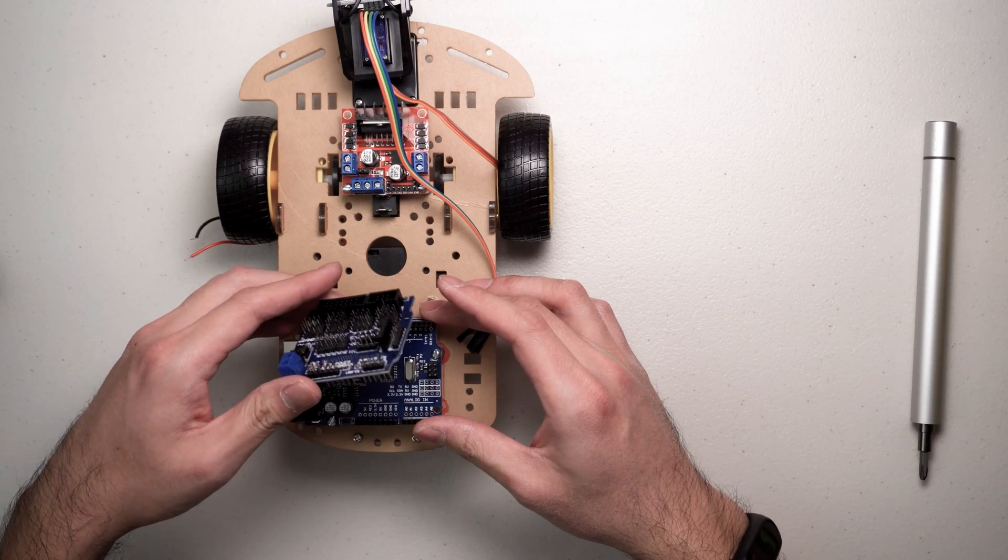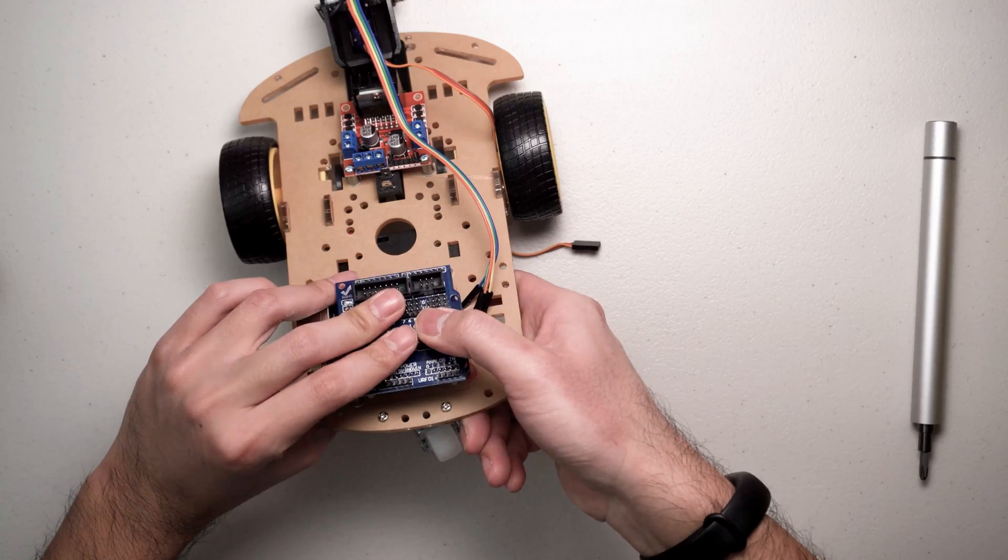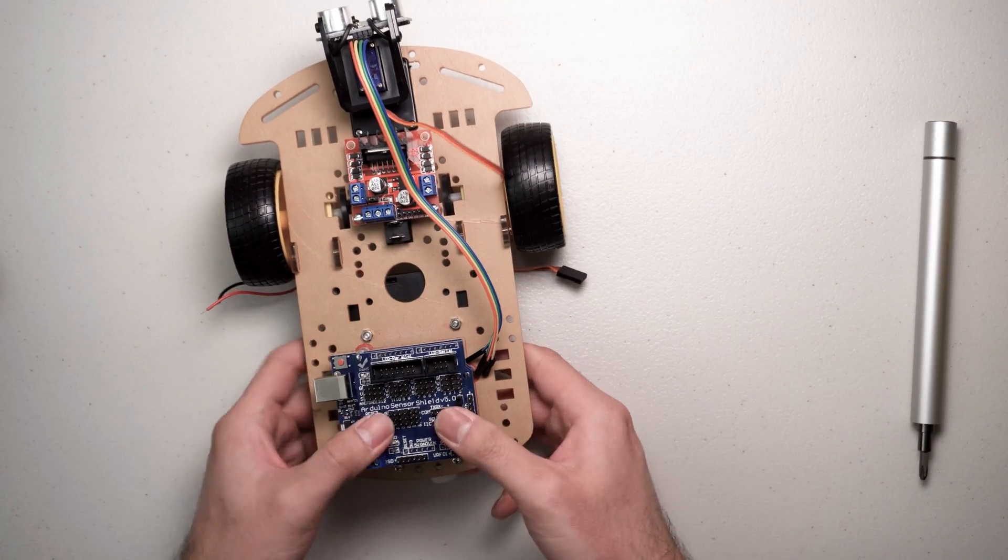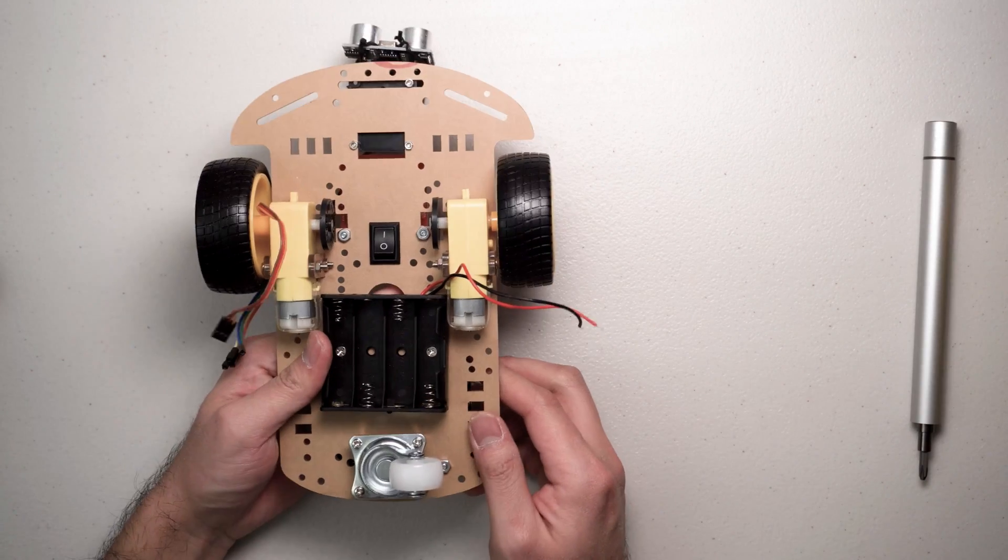The Arduino sensor shield just needs to be installed on top of the Arduino. Check the orientation by matching the screw holes. Here you can see both sides of the car after installation.